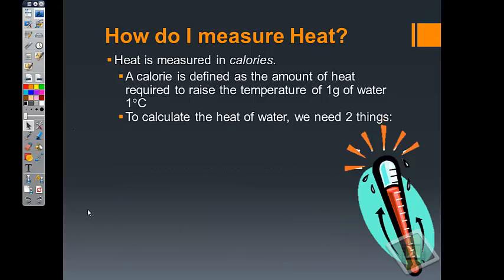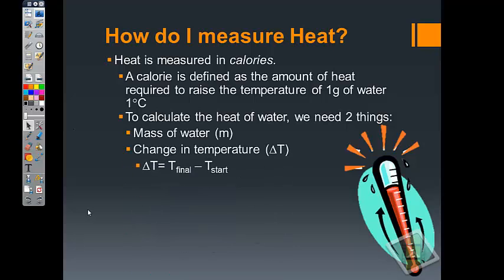So to be able to calculate heat of water, to be able to know how much heat is gained or lost, we need to know two things. Number one, we need to know how much water we have, and that's usually in mass. Now keep in mind, a lot of times we know with water we're measuring volume, but remember that the density of water is 1 gram per milliliter. We also need to know the change in temperature, which we refer to as delta T, and delta is the Greek symbol for change. And the way I find delta T is final temperature minus the starting temperature.